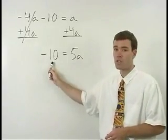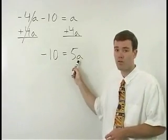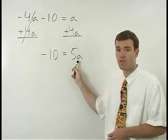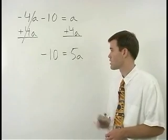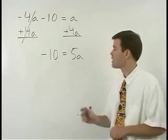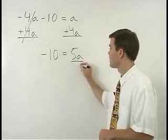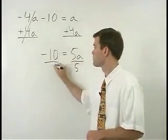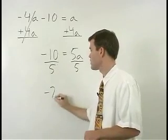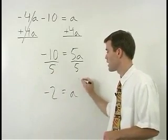So we have our number on one side of the equation and we've put our variables together on the other side of the equation. To solve for a from here, it's easy. Just divide both sides by 5 and negative 2 equals a.